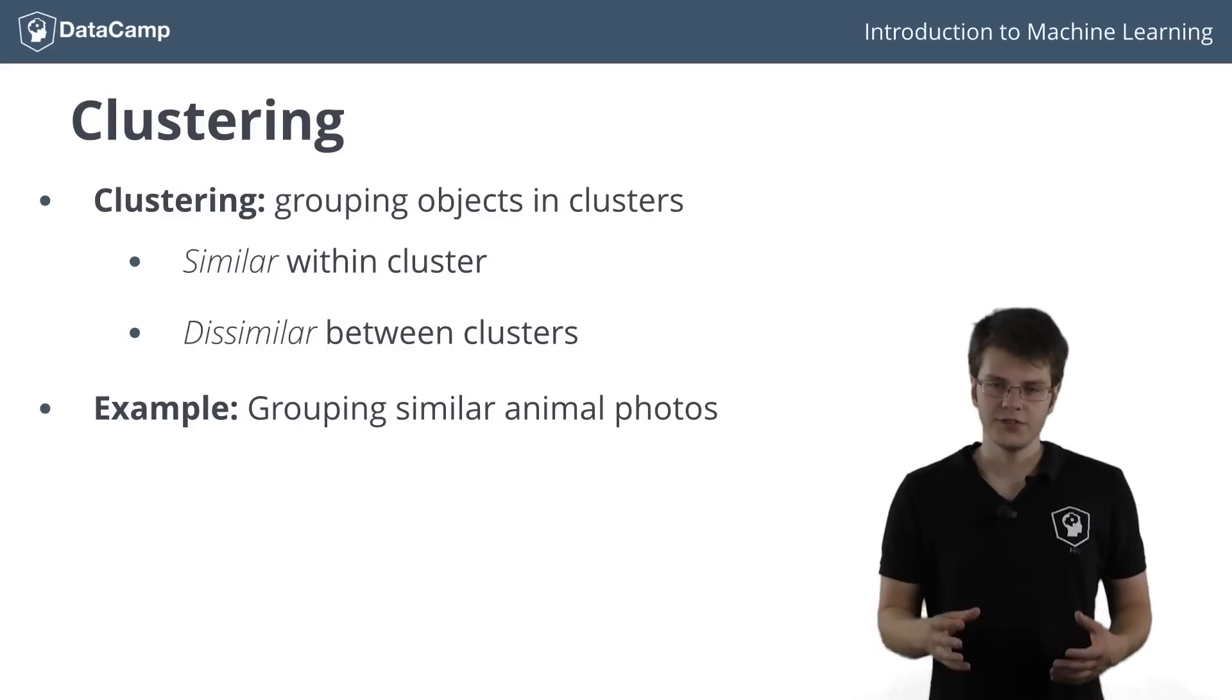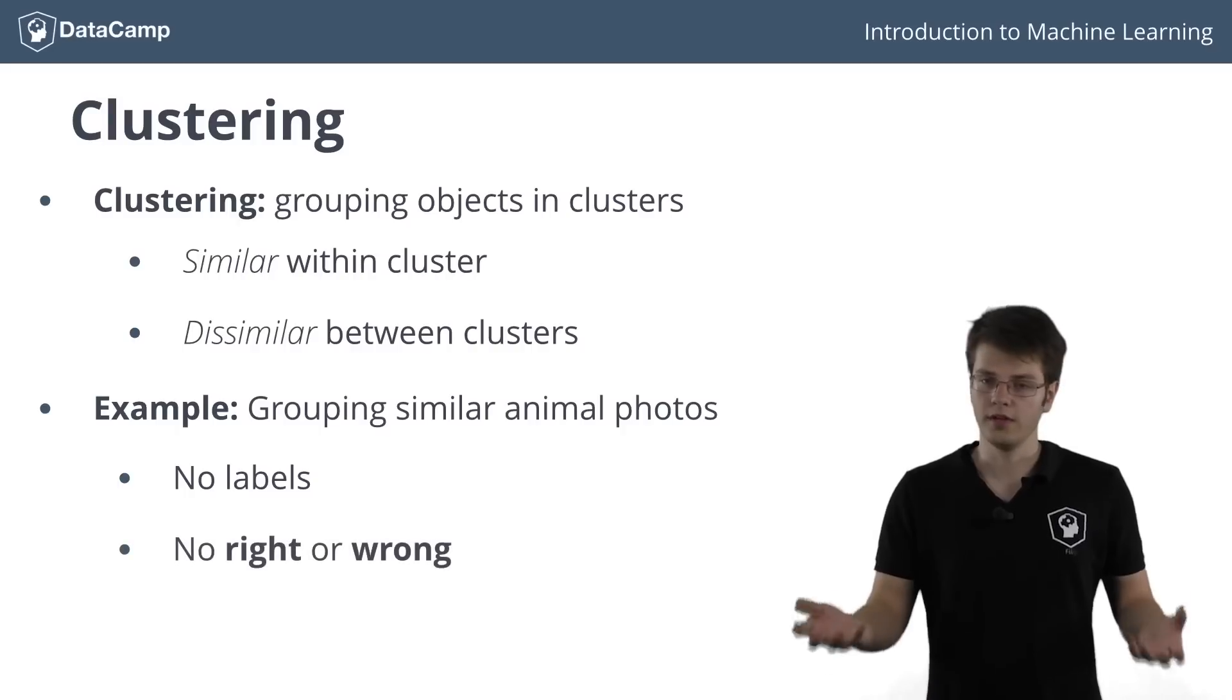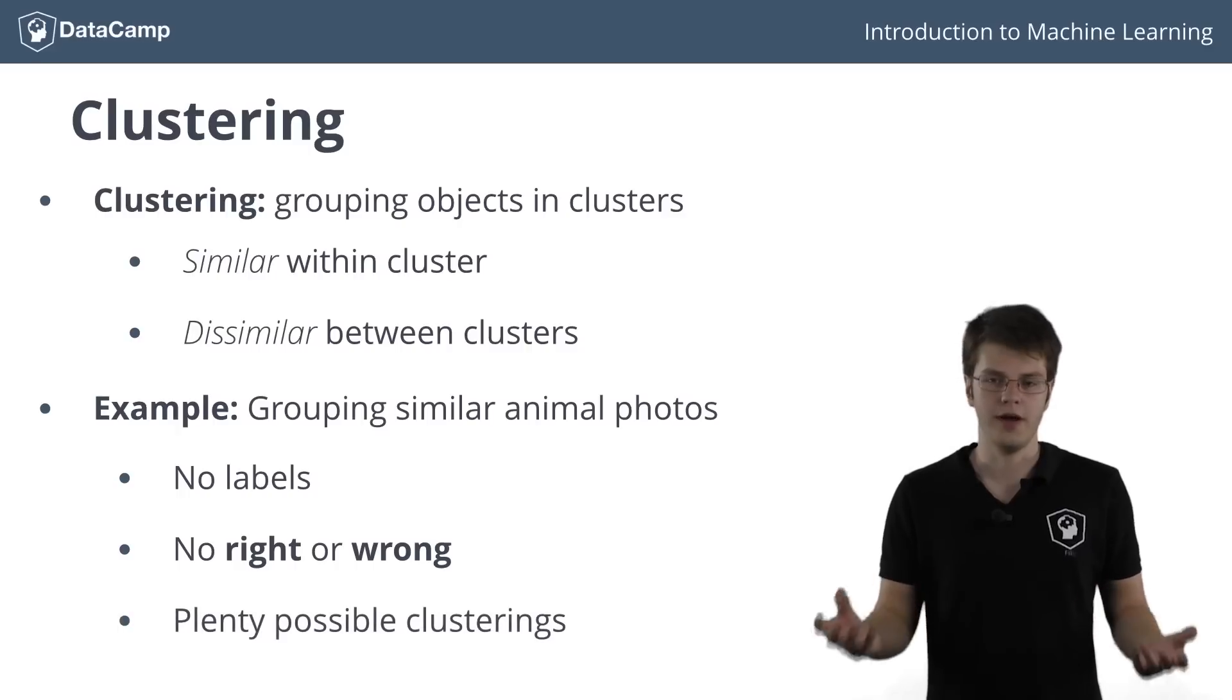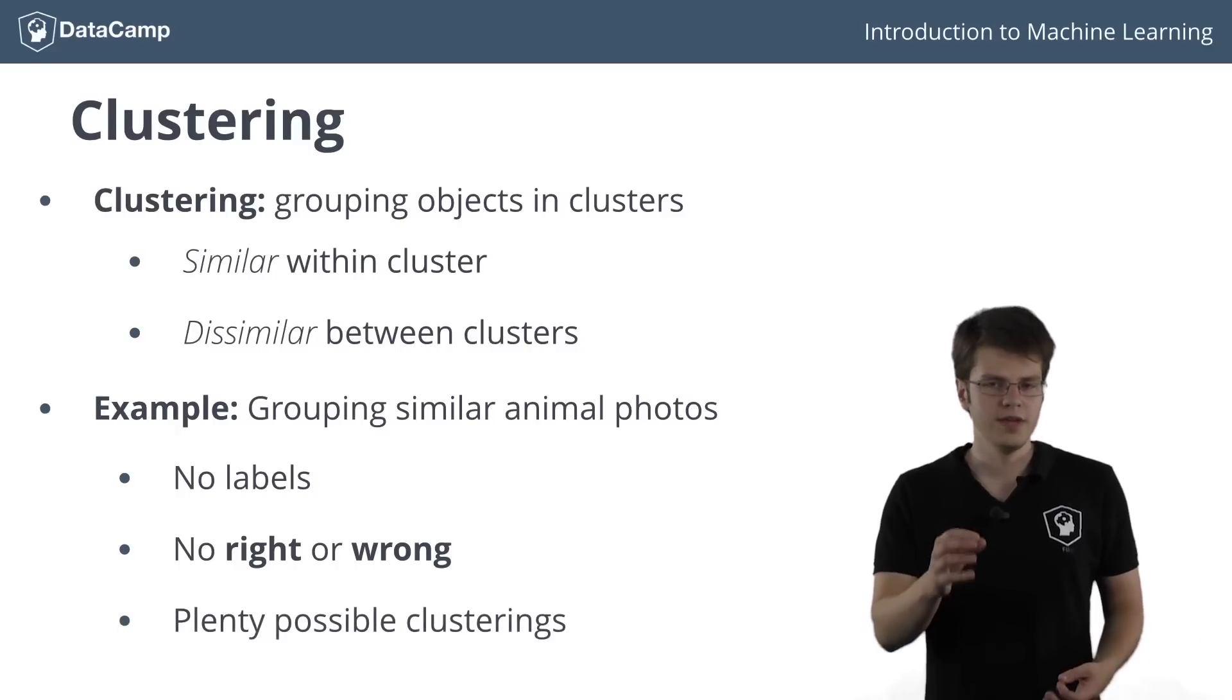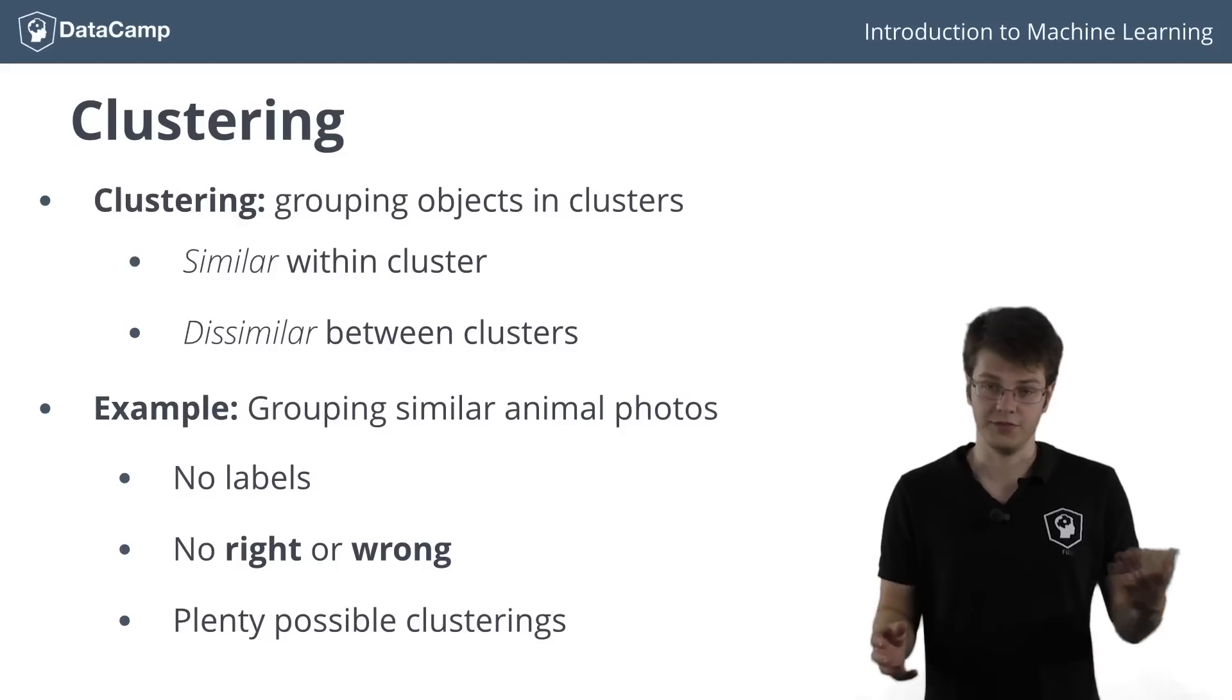You could say that clustering is different in the sense that you don't need any knowledge about the labels. Moreover, there is no right or wrong in clustering. Different clusterings can reveal different and useful information about your objects. This makes it quite different from both classification and regression, where there always is a notion of prior expectation or knowledge of the result.